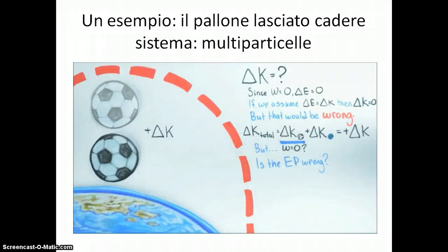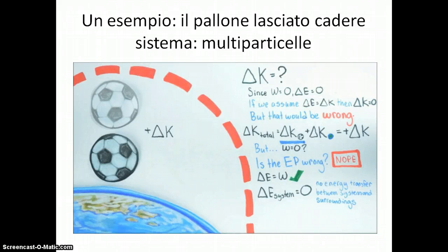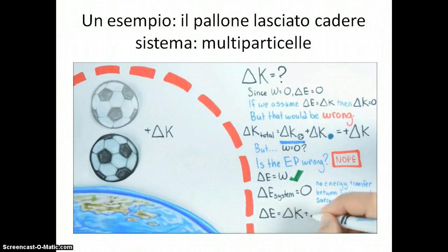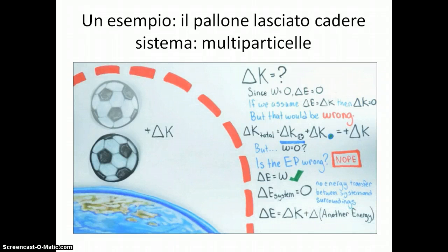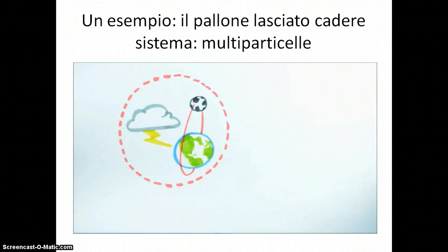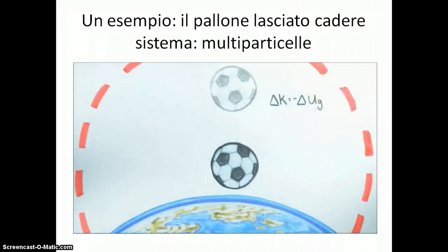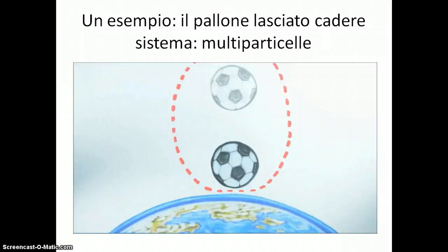Is the energy principle wrong here? Nope. Delta E equals W is completely correct. The change in the system energy is zero, since there is no energy transfer between the multi-particle system and the surroundings. The difficulty is that the change in delta E involves more than just changes in kinetic energy. There's another energy we need to account for in our multi-particle system. For certain interactions like gravitational or electric interactions, these terms represent energy changes we'll call changes in potential energy, which we symbolize as delta U. We can now use this expression to solve for the final kinetic energy of the ball, and we find we get the same result as before when we just chose the ball as our system.